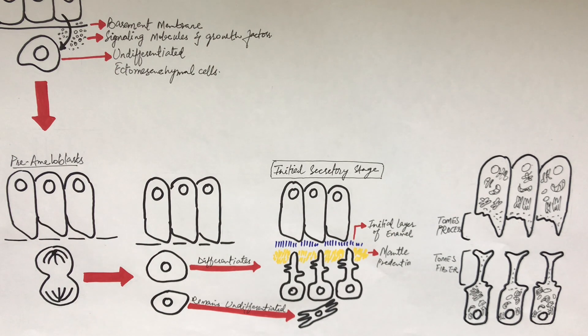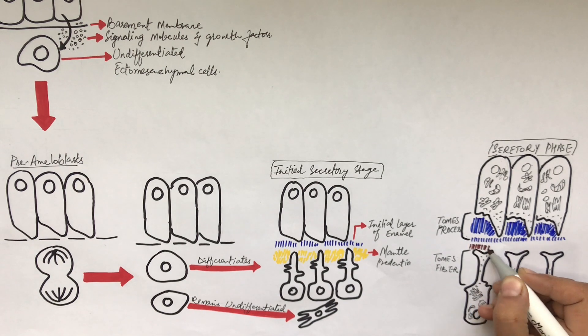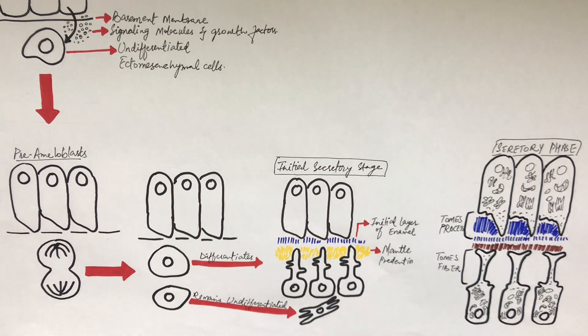At this point, the ameloblasts will be in their secretory phase and will lay down the enamel matrix for the rod and inter-rod enamel. The mantle pre-dentine mineralizes to mantle dentine, and the mature odontoblasts will lay down another layer of dentinal matrix called pre-dentine. In this way, a layer of pre-dentine is always present between the odontoblasts and the mineralization front.